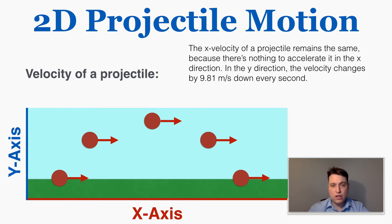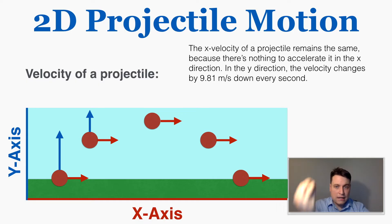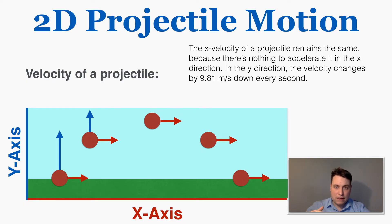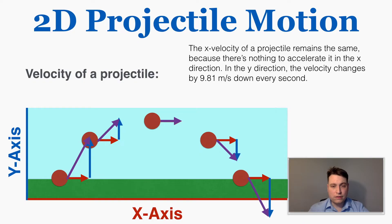The y velocity, however, is being changed because there's a downward acceleration due to gravity. This particular projectile starts with a very positive upward velocity, but as it rises it slows down in the upward direction. At the very top of its motion there's no y velocity — it's slowing to a stop and then beginning to fall again in the other direction. As it falls it gets faster and faster in the negative direction. To understand what the overall velocity looks like, we do vector addition by combining tip to tail, and the resulting velocities show the ball starting at a large angle, slowing until it's only moving horizontally, then beginning to fall again.